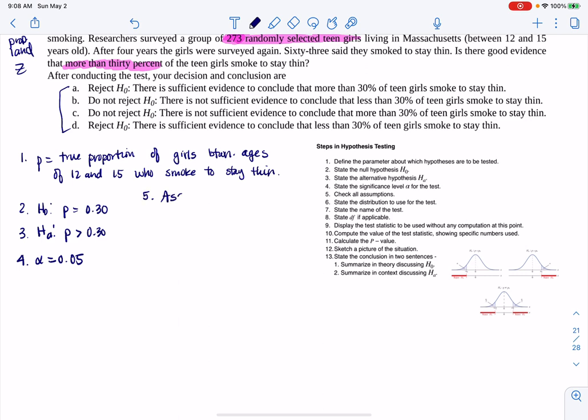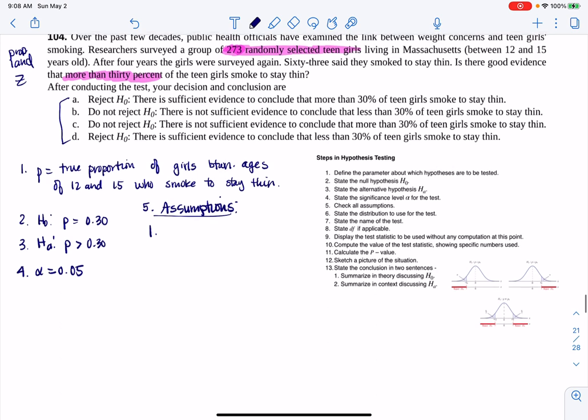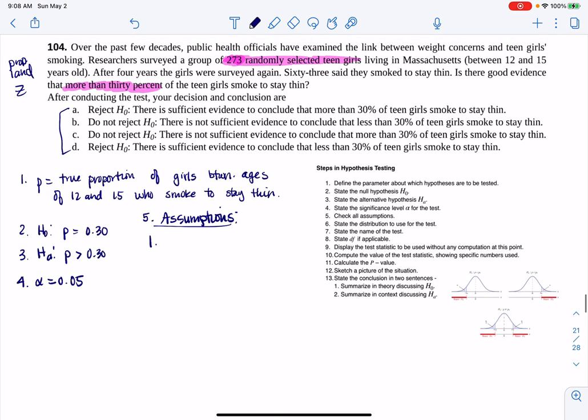For assumptions in prop land, the first one's always the same. Did I have a random sample? Let's go look through the wording of the problem and see, yes, I see the phrase random, so I will say yes, I had a random sample.